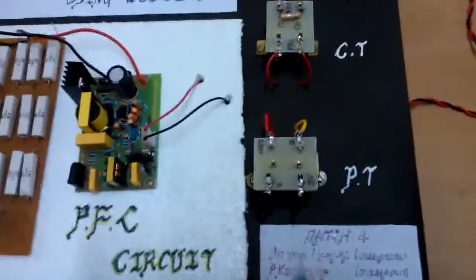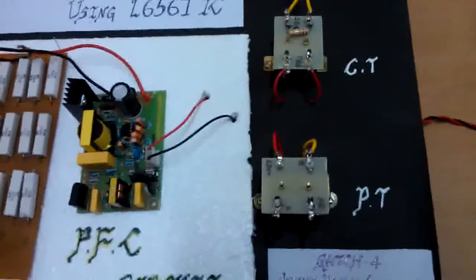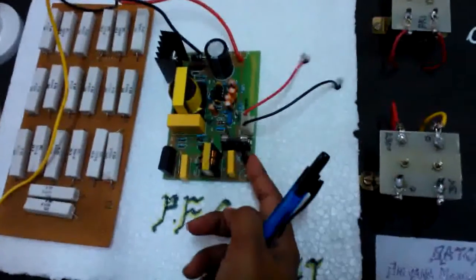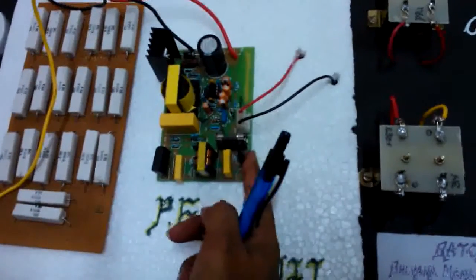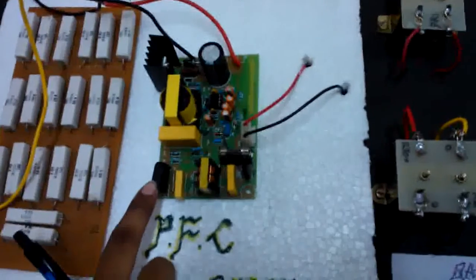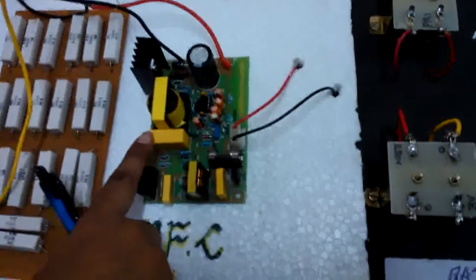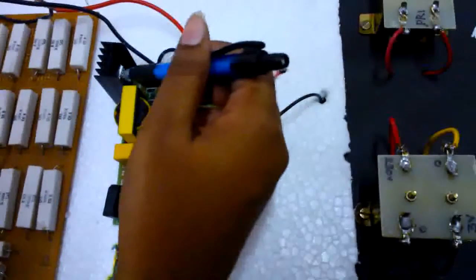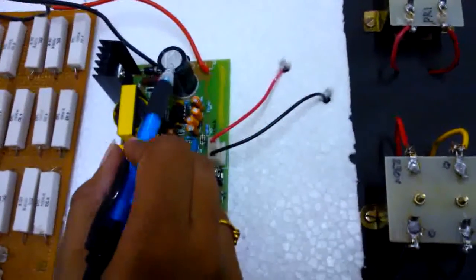These are the CTs and PTs which are used for the power factor measurement. These are the loads and this is the PFC circuit. This is the thermistor. This is the line filter. This is KBL10 or diode bridge rectifier. This is input capacitance. This is boost inductor. And this is the MOSFET IRF 840. And this is the boost capacitance.